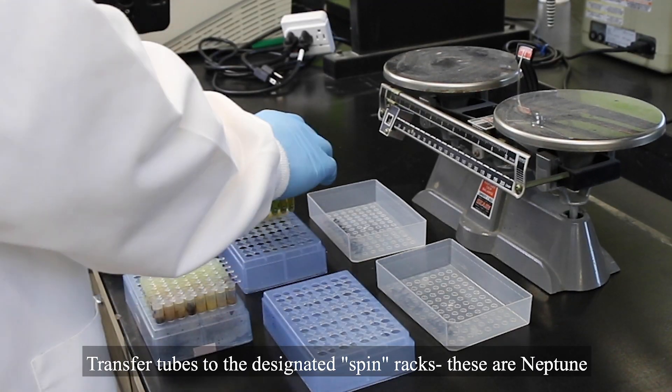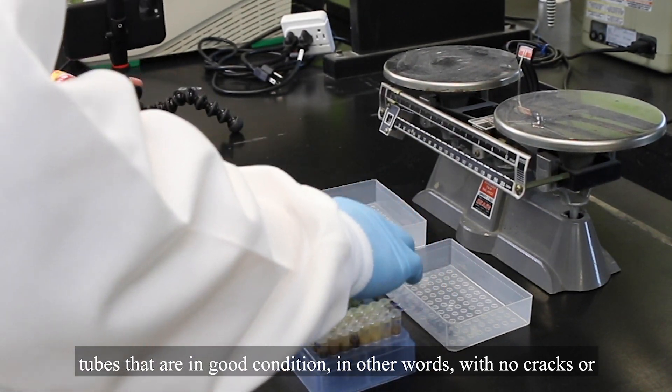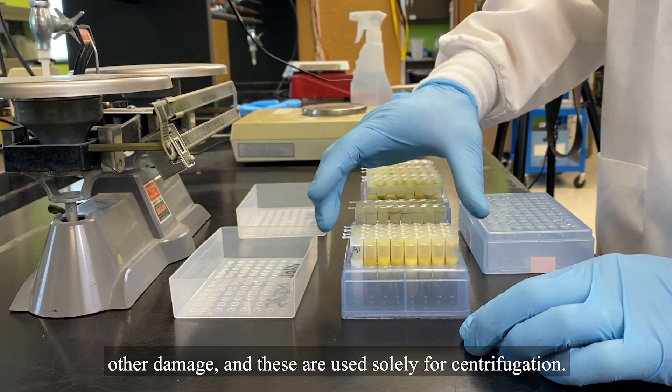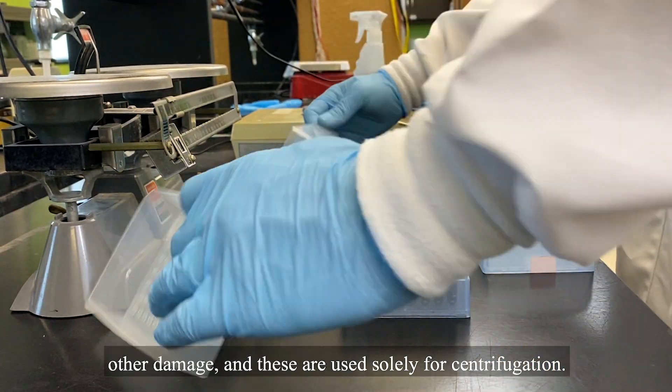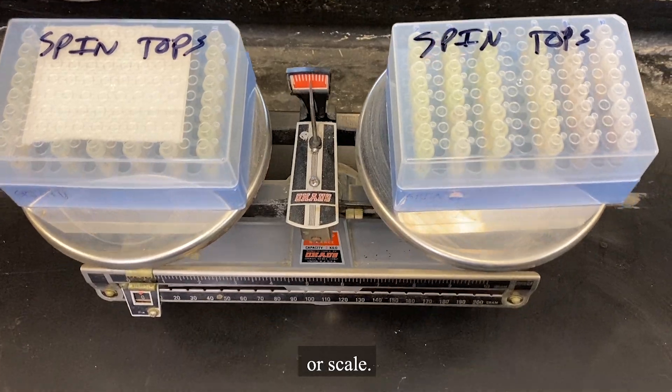Transfer tubes to the designated spin racks. These are Neptune tubes that are in good condition, in other words, with no cracks or other damage, and these are used solely for centrifugation.